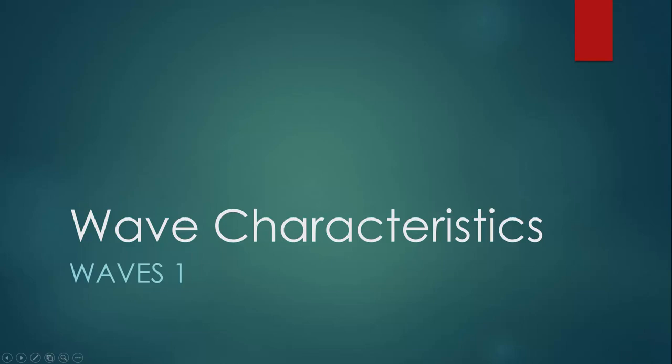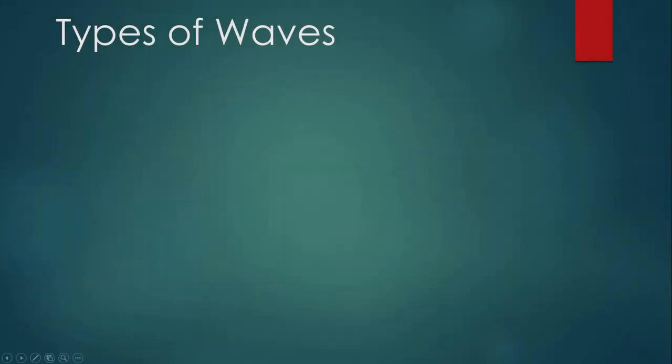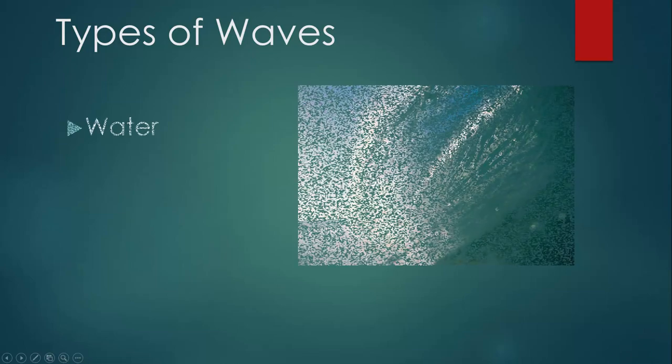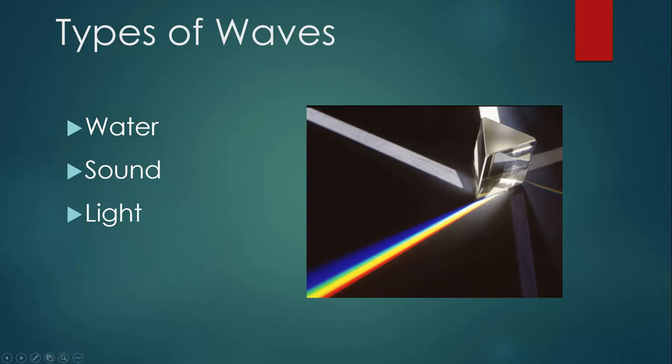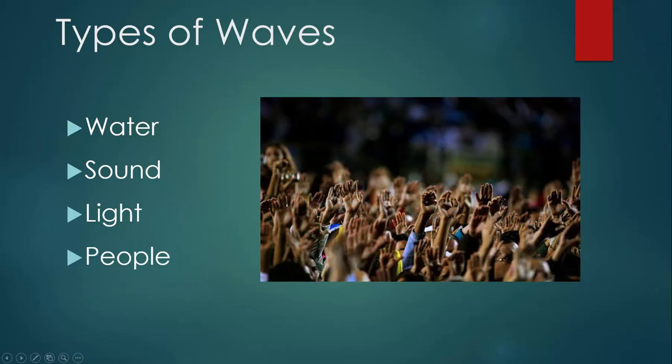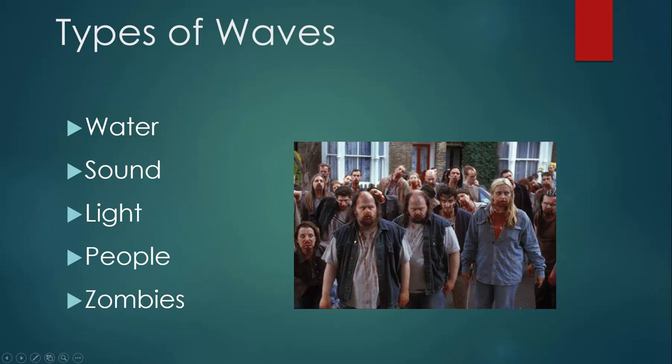This lesson is about wave characteristics. There are many different types of waves. We have water waves, sound waves, light waves, people make waves at a sporting event, and even zombies come in waves.